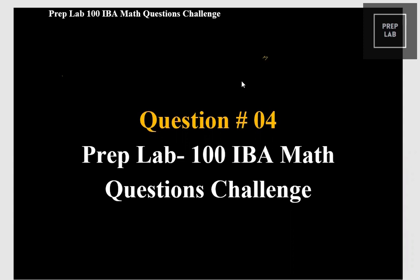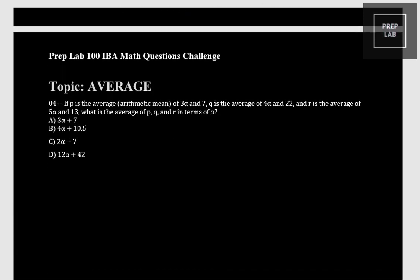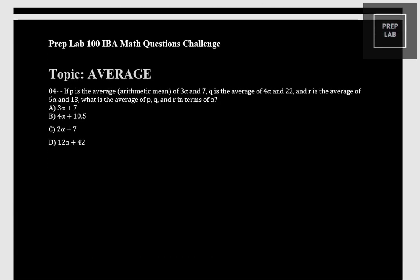This is a very interesting question. The topic is average. Let's read it out: if p is the average of 3 alpha and 7, and q is the average of 4 alpha and 22, and r is the average of 5 alpha and 13, what is the average of p, q, and r in terms of alpha?